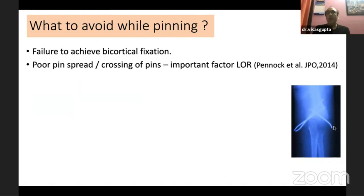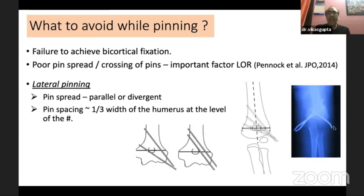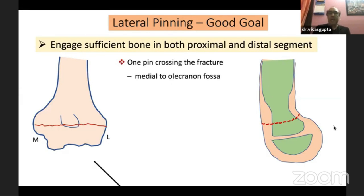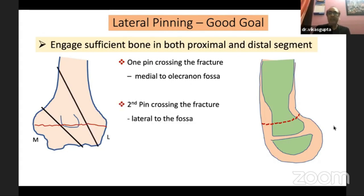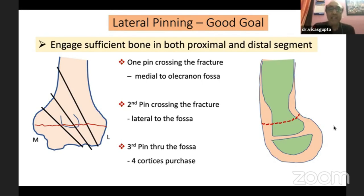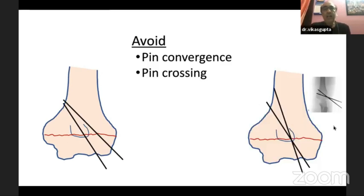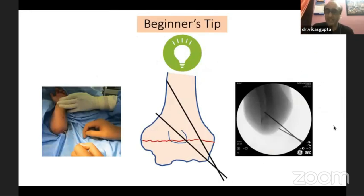Pin configuration is an important factor for loss of reduction. According to Pennov, pins should be either parallel or divergent, and pin spacing should be at least one-third the width of the humerus at the level of the fracture — with wide pin spacing if possible. The first pin should cross middle to the olecranon fossa, the second pin lateral to the fossa, and the third pin through the fossa for better cortical purchase. In the lateral view when reduced, the capitulum is slightly anterior to the plane of fracture, so pins should angulate slightly 10 to 15 degrees posteriorly for the first pin, and the second pin may be parallel to the humeral shaft. To avoid pin convergence: when you cross the pins outside, they will diverge inside — so always ensure crossing outside so pins diverge inside the fracture.